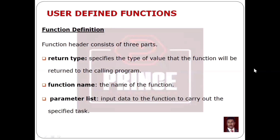The function name is the name of the user-defined function. The parameter list is the input data to the function, used to carry out the specified task that the function performs. The function uses its parameter list to operate.